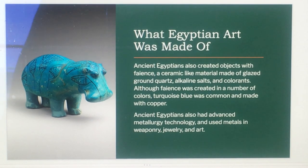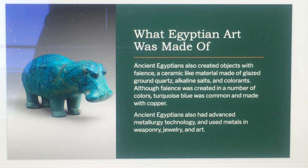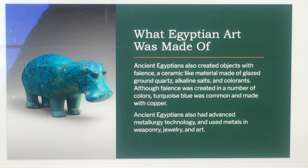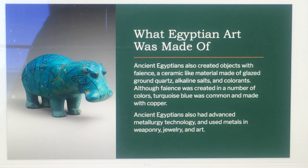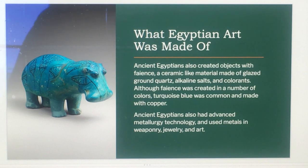Ancient Egyptians also created objects with faience, a ceramic-like material made of glazed ground quartz, alkaline salts, and colorants. Turquoise blue was a common color, made with copper. Ancient Egyptians also had advanced metalworking technology and used metals in weaponry, jewelry, and art.